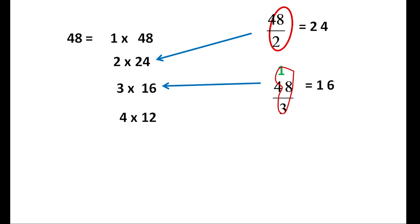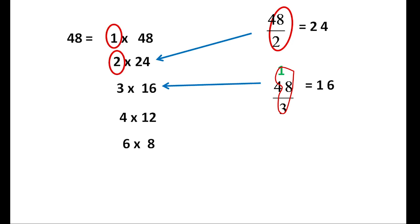We check 6: 6 into 8 is 48, so 6 and 8 are factors. We check 7: 7 does not give 48. We check 8, but 8 already appears, so we stop here. The factors of 48 are: 1, 2, 3, 4, 6, 8, 12, 16, 24, and 48.